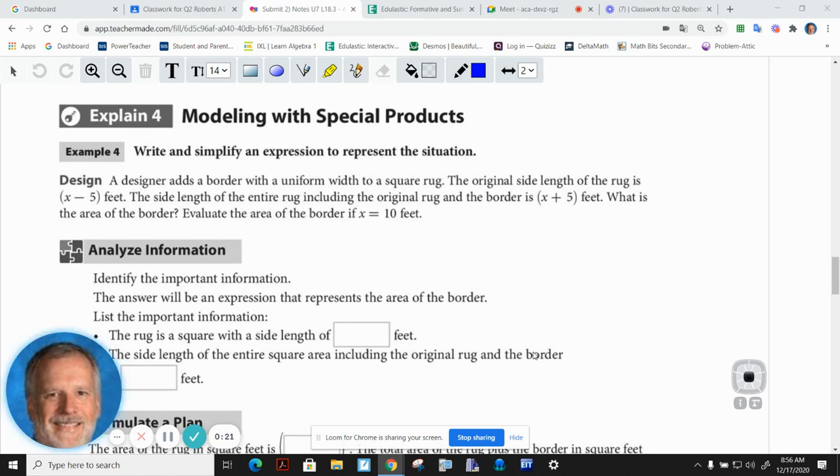In your notes you'll see this problem, Example 4. It says that a designer adds a border with a uniform width to a square rug. The original side of the rug is x minus 5 feet. Probably need to circle that - we've talked about circling important things. And the length of the entire rug, the original rug and the border, is x plus 5 feet. Probably need to circle that. So what is the area of the border?